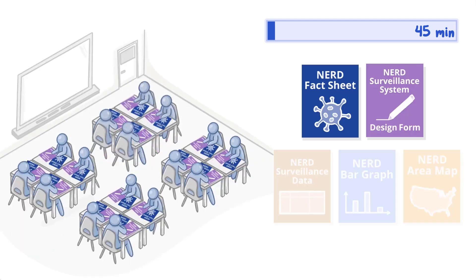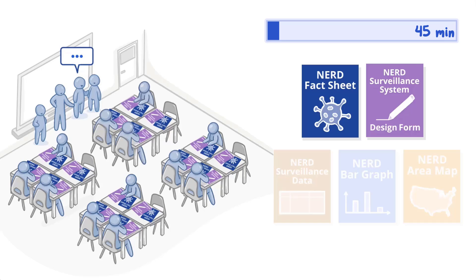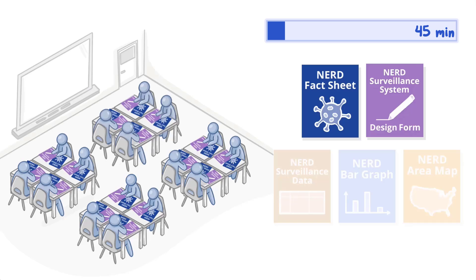Next, encourage someone from each group to share their answers with the class, summarizing key ideas from each group on the board. After all groups have shared, initiate a class discussion about the key characteristics of a good surveillance system.